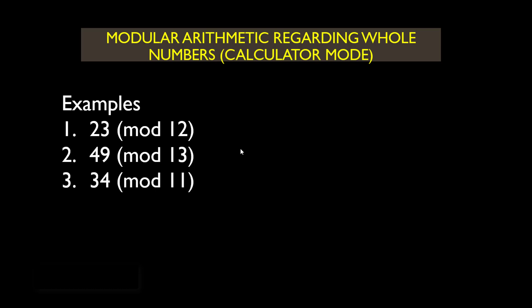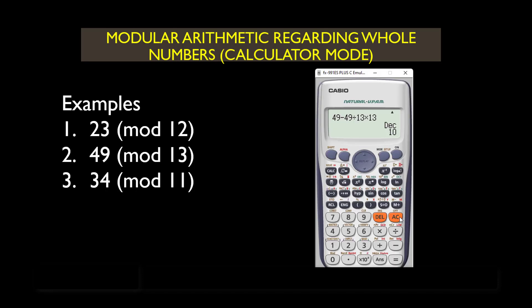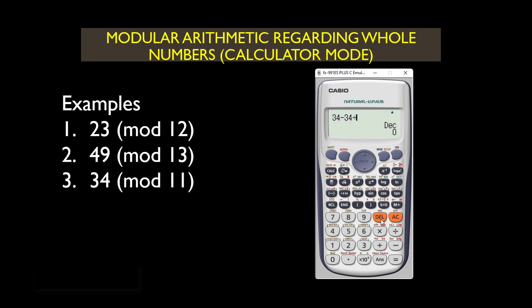Let's go to the third example: 34 mod 11. Press the AC key, then type 34 minus 34 divided by 11 times 11. The result is 1, so when you divide 34 by 11 the remainder is 1. The result of 34 mod 11 is simply 1. Remember, this only works when you are dealing with whole numbers.